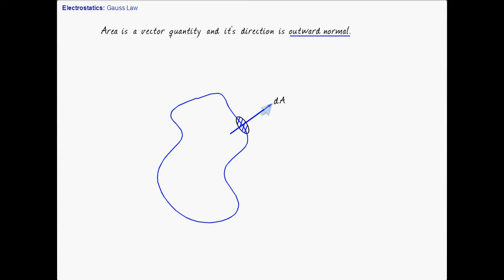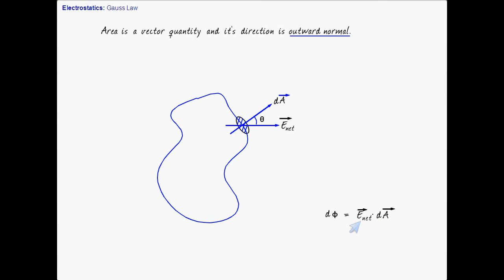At a given location, let us say the electric field is in some direction, and the angle between the electric field and the area vector is theta. Then the flux linked with this small element will be E dot dA. The flux is a scalar quantity — it is the dot product of two vectors, so it does not have any direction.